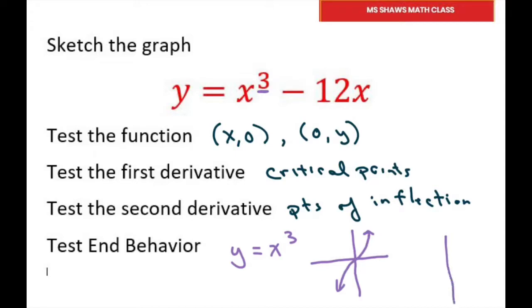It also means since we have degree 3, we have at most n. If we have x to the n, then we have n minus 1 turning points. So basically, since our n is 3, that's 3 minus 1, which is 2, at most 2 turning points.